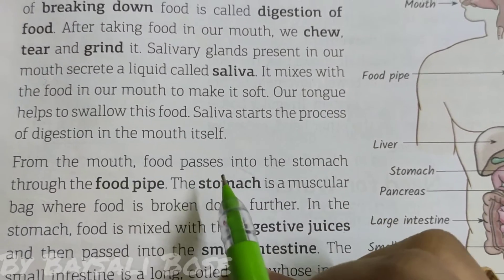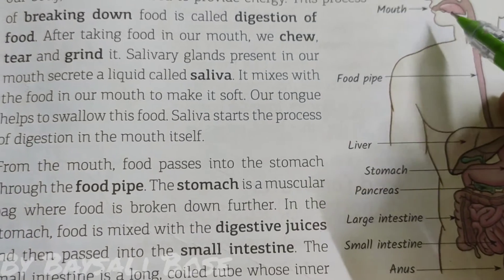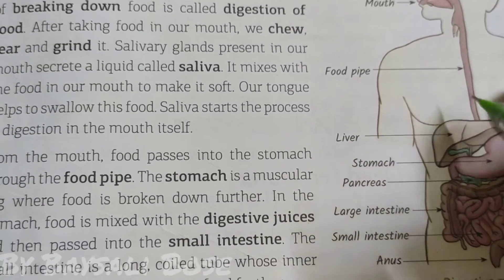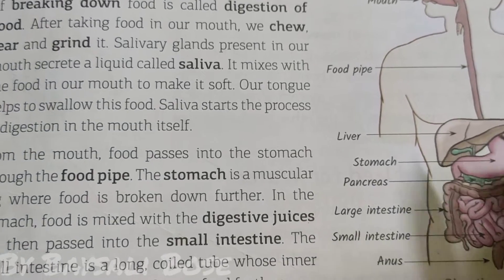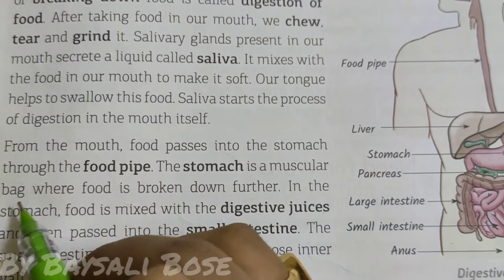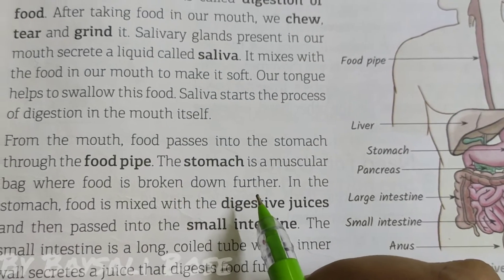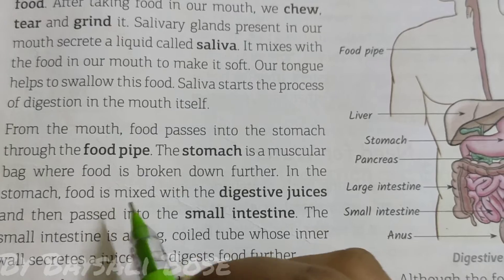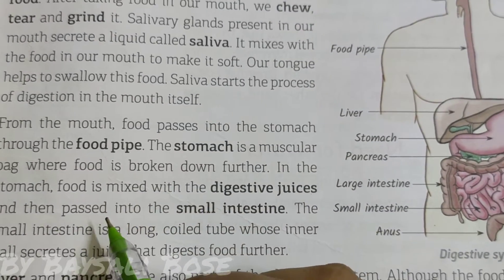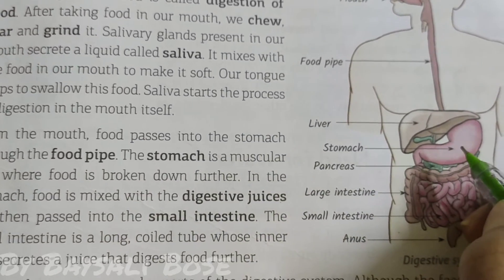From the mouth, food passes into the stomach through the food pipe. The stomach is a muscular bag where food is broken down further. In the stomach, food is mixed with digestive juice and then passed into the small intestine.